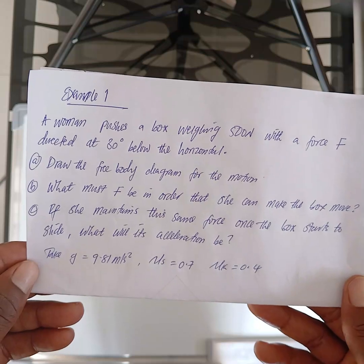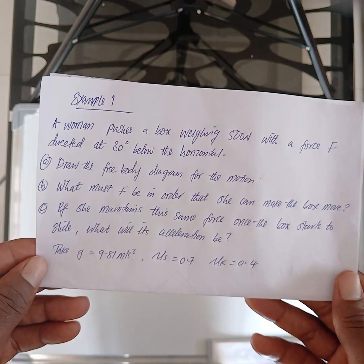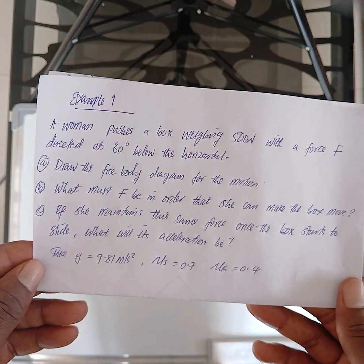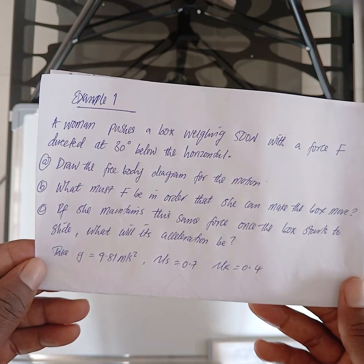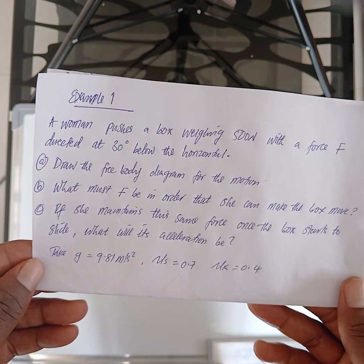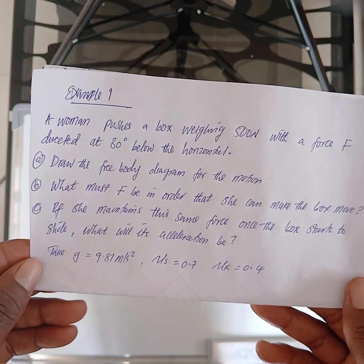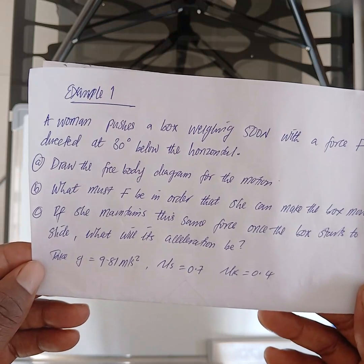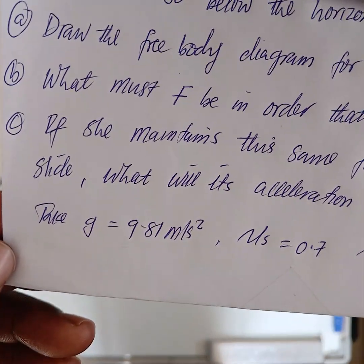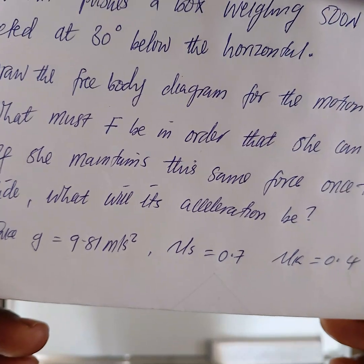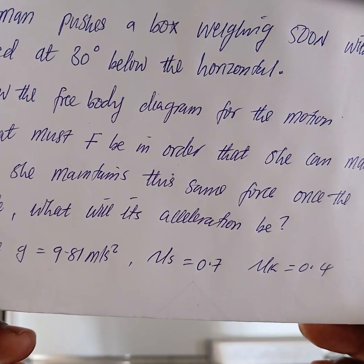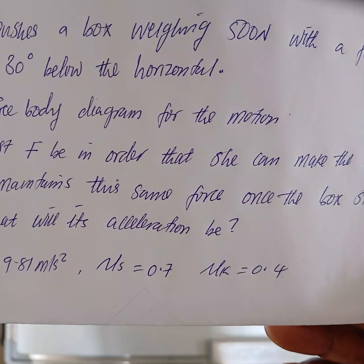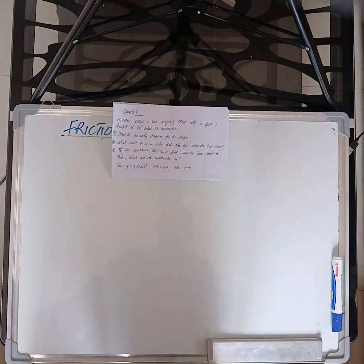We can tell from part B that the box is not moving. Part C: if she maintains the same force once the box starts to slide, what will its acceleration be? We can tell that in C the box has started moving, therefore acceleration is not zero. We are given: gravity = 9.81, coefficient of static friction μs = 0.7, and coefficient of kinetic friction = 0.4.